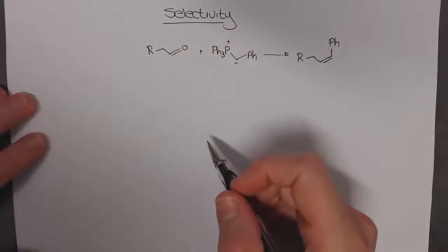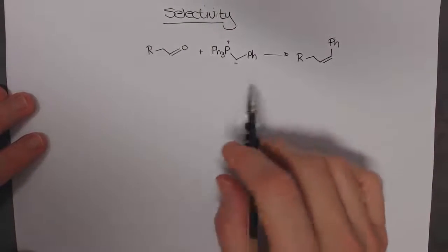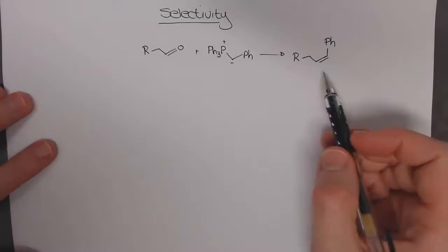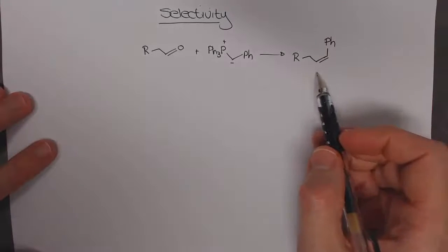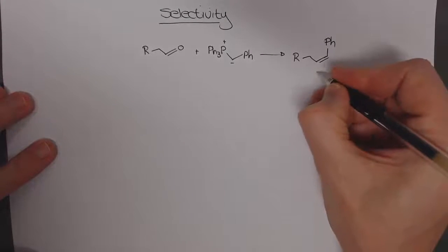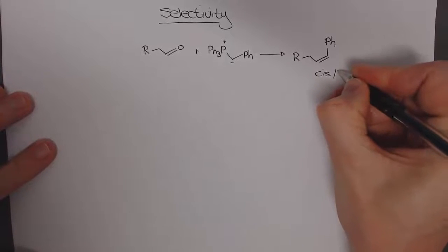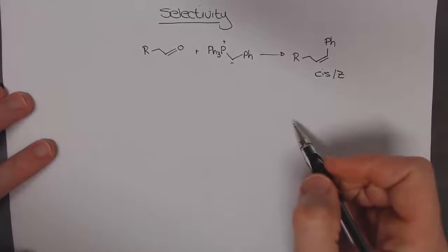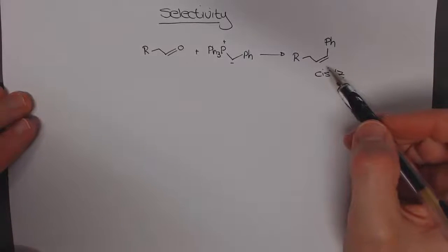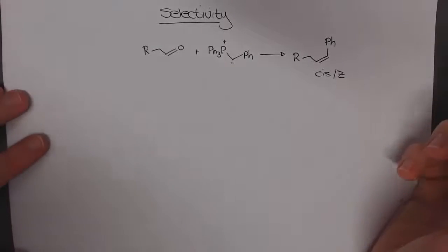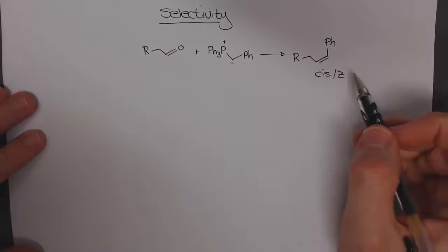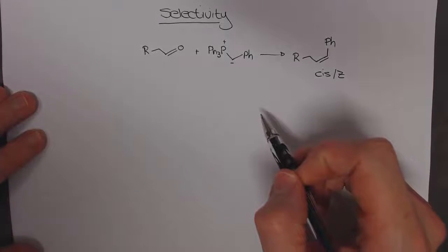The last thing we need to discuss in terms of the Wittig reaction is the selectivity. The reaction I drew in the beginning gave the product as the cis alkene or the Z alkene. And the question is, why did I do that? Generally speaking, an E alkene or trans alkene would be the more stable one. And this is actually an important facet of the Wittig reaction.